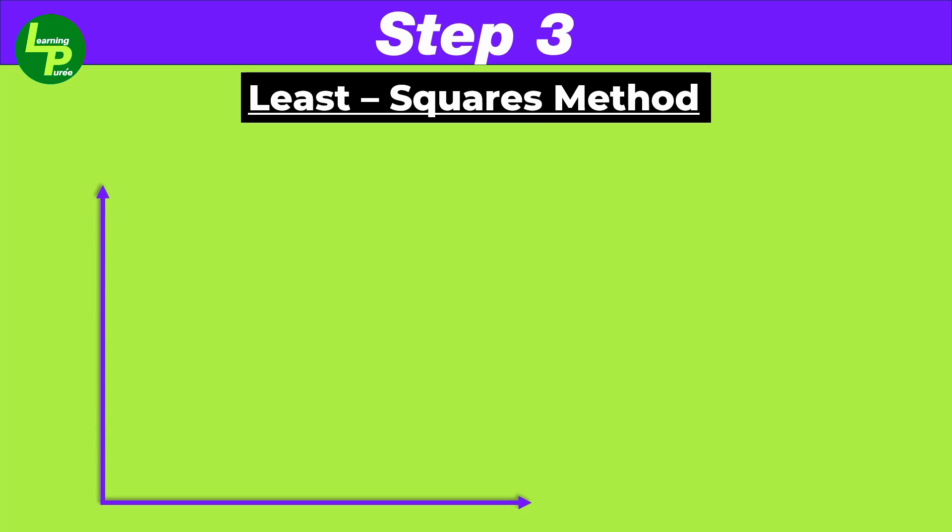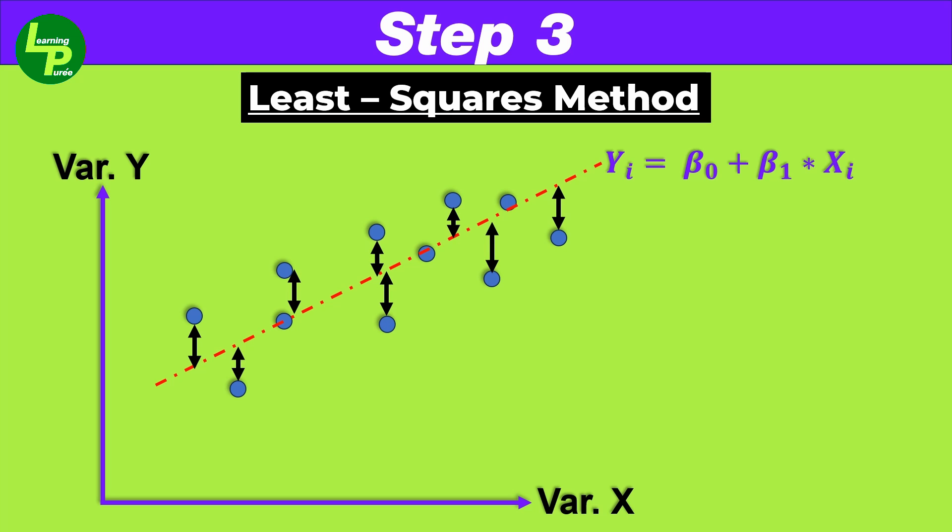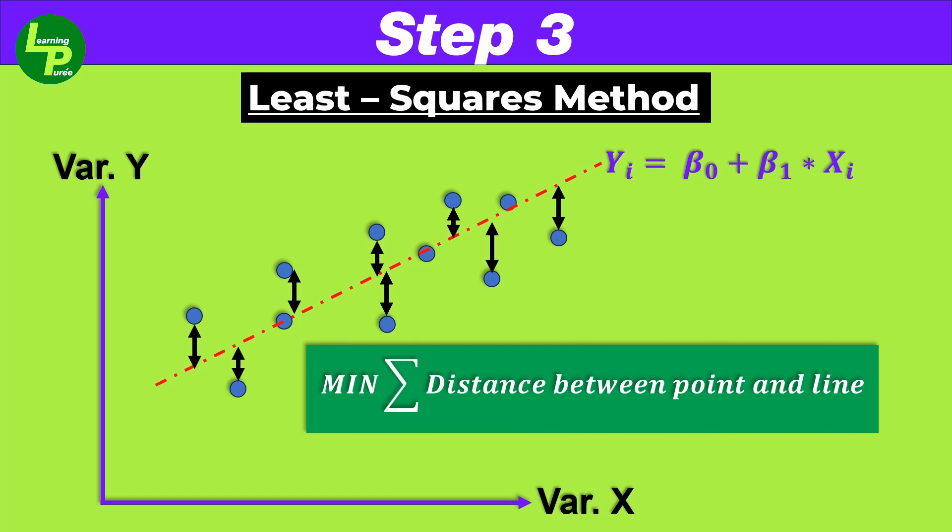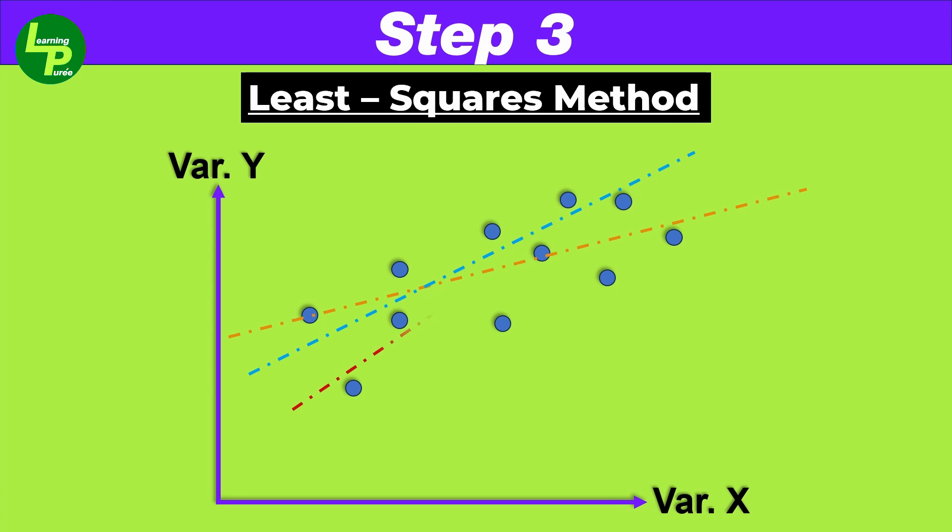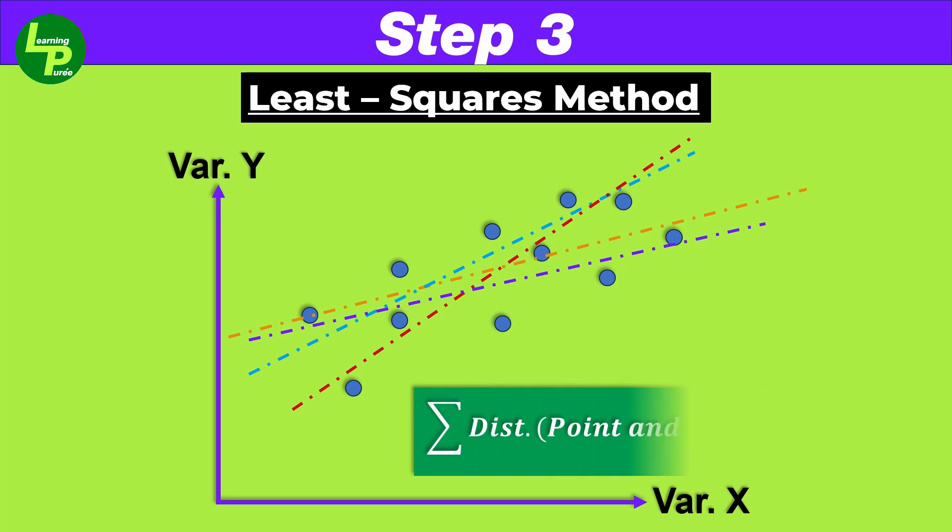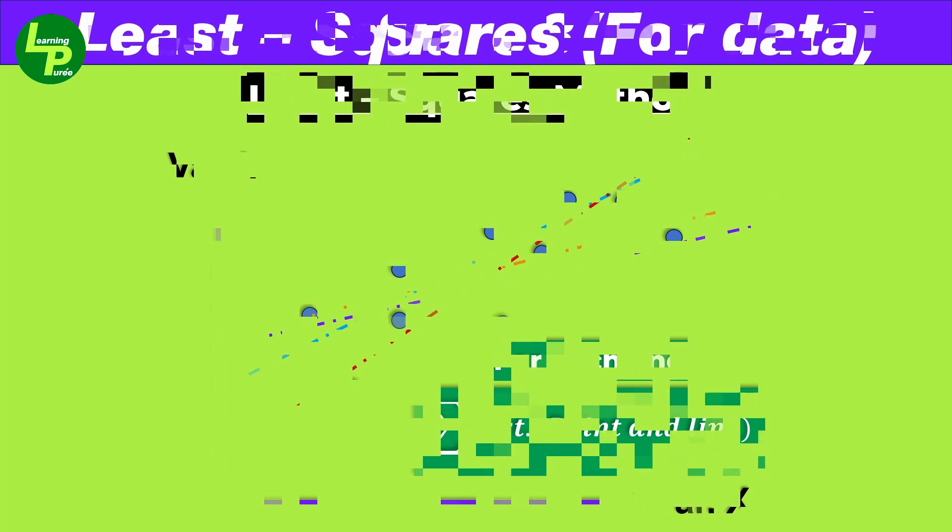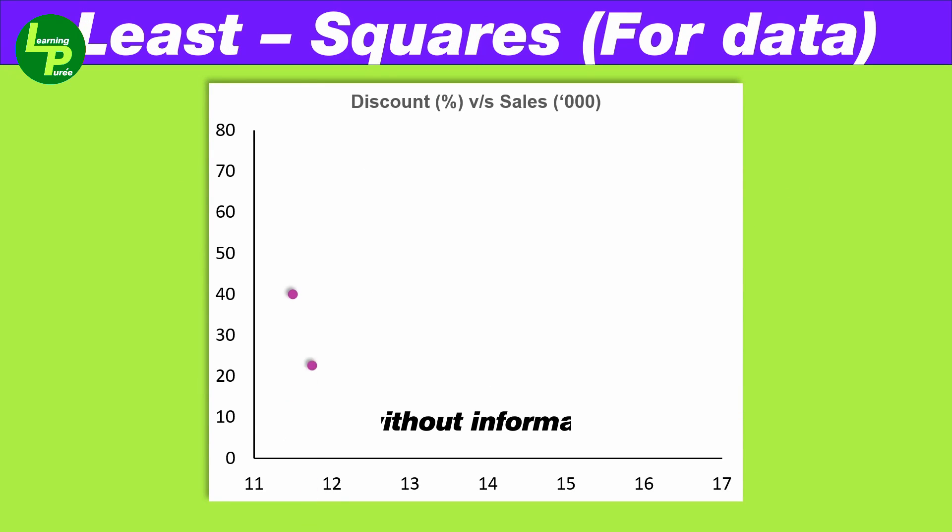In the least squares method, we attempt to identify and fit a line to all these points in such a manner that we minimize the distance between the actual coordinates and that of the fitted line. The line with the least distance from the actual data points will be the line of best fit. To achieve this task, we will run multiple lines through these data points and calculate the distance of the data points from each line.